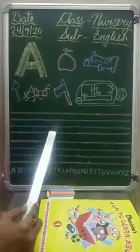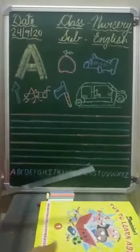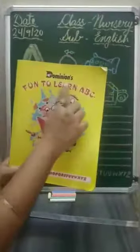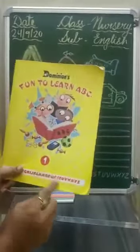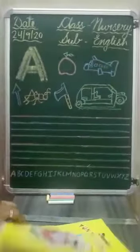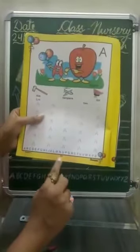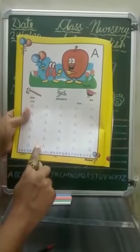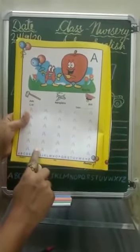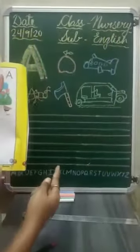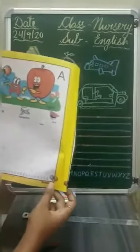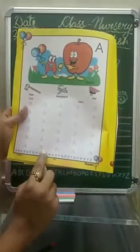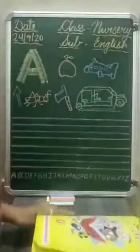Now kids, we will learn formation. Take out your book — Dominions Fun2Learn ABC 1 — and open your book to page number 48. Dear kids, look at here. These are the tracing dots. You have to write A on the tracing dots. Ma'am will show you on the blackboard first, after that you will start book work.